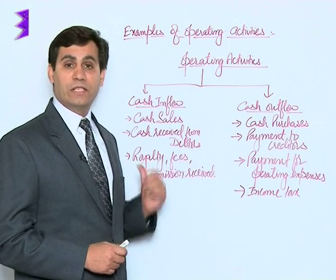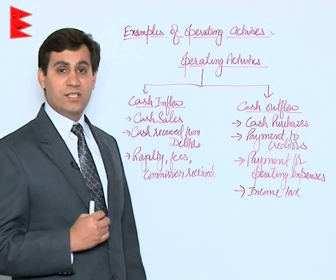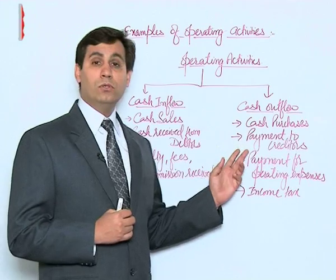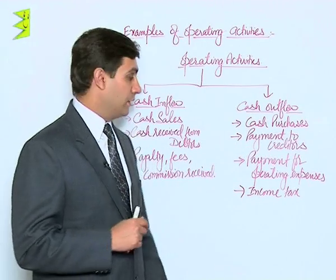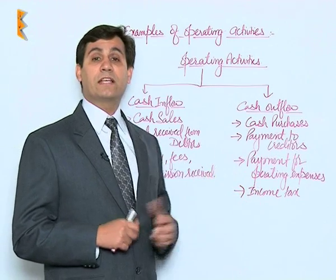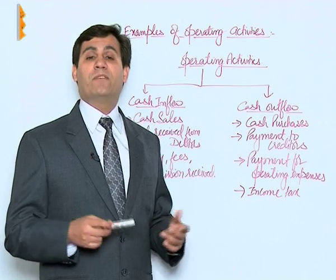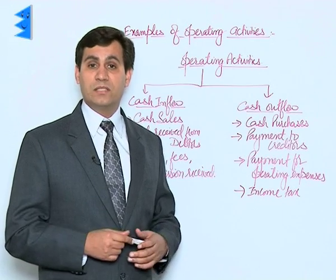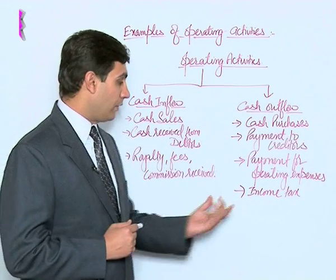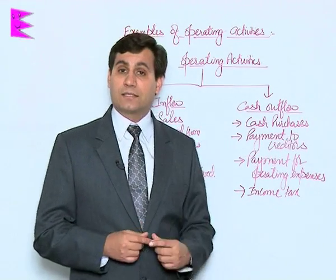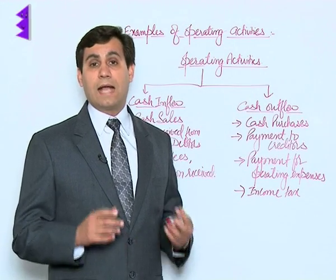Coming to outflows, these can range from cash purchases to payment to creditors on account of credit purchases. Then, payment of operating expenses includes payment for wages, rent, electricity bills, water bills, and other day-to-day expenses. Payment made on account of income tax is also considered to be an operating activity.